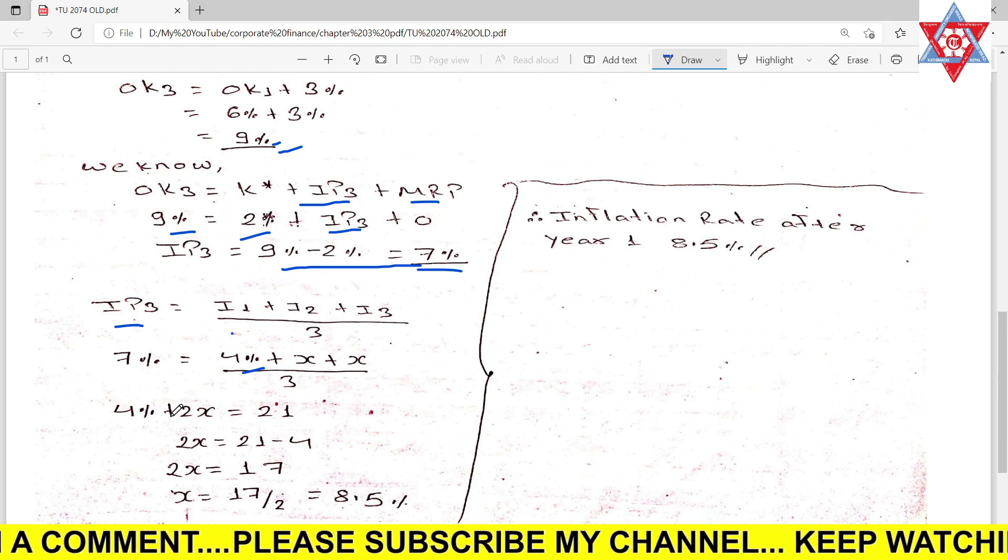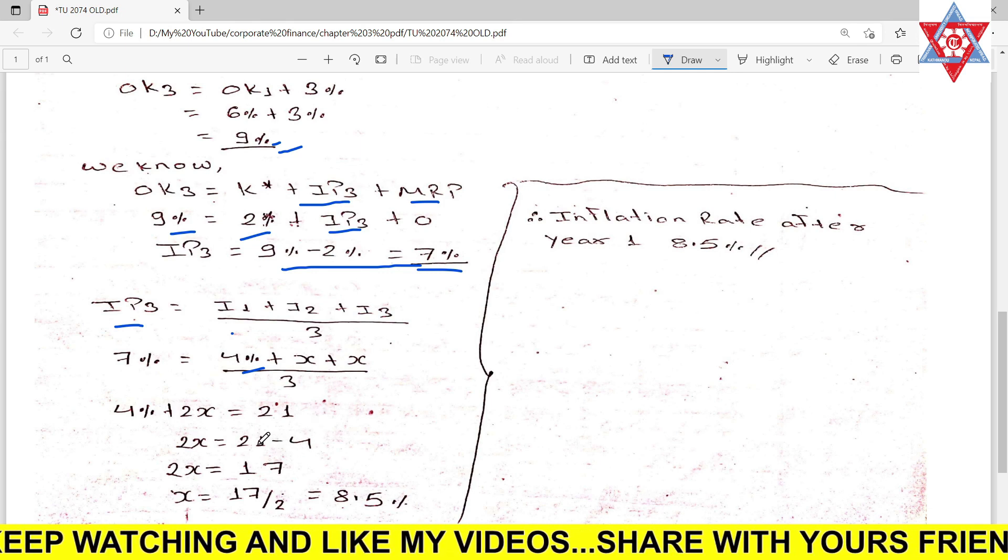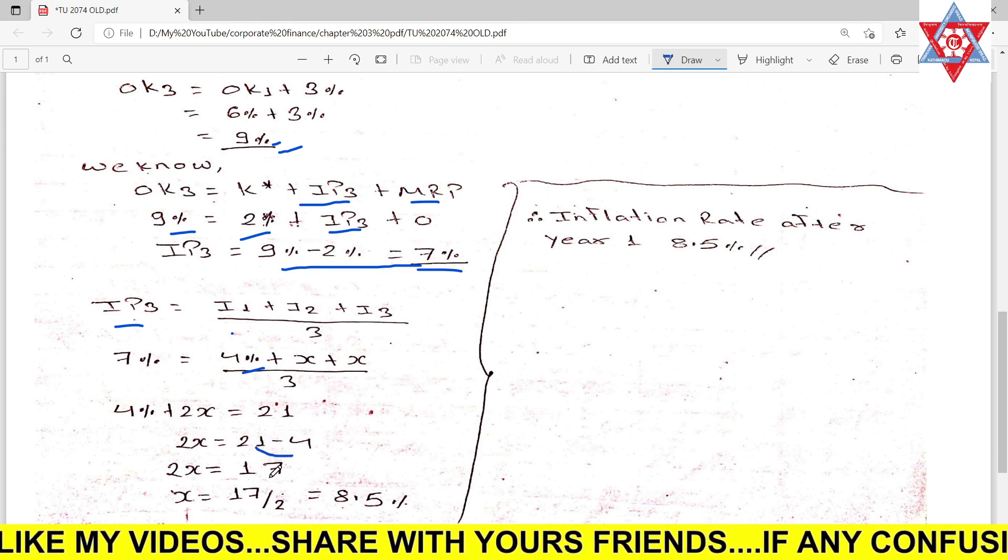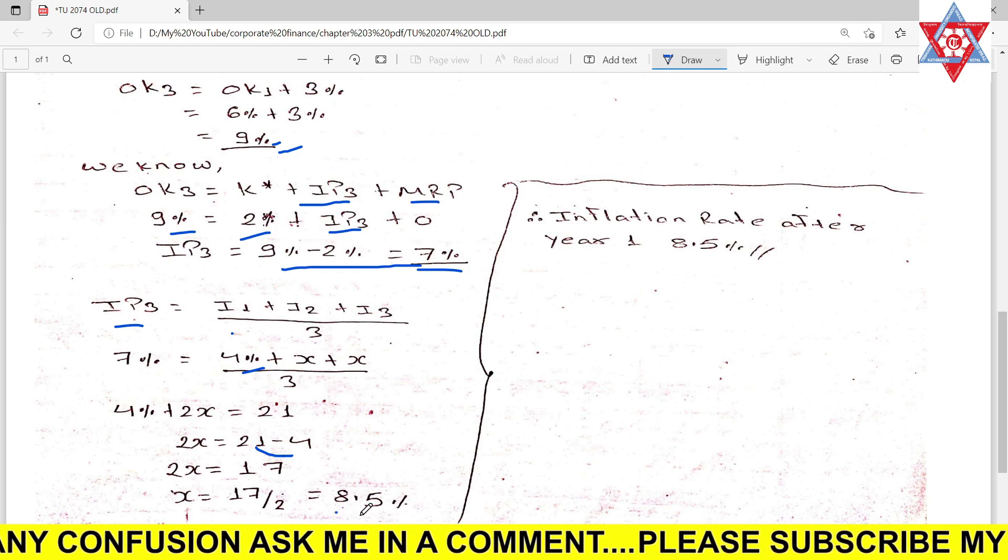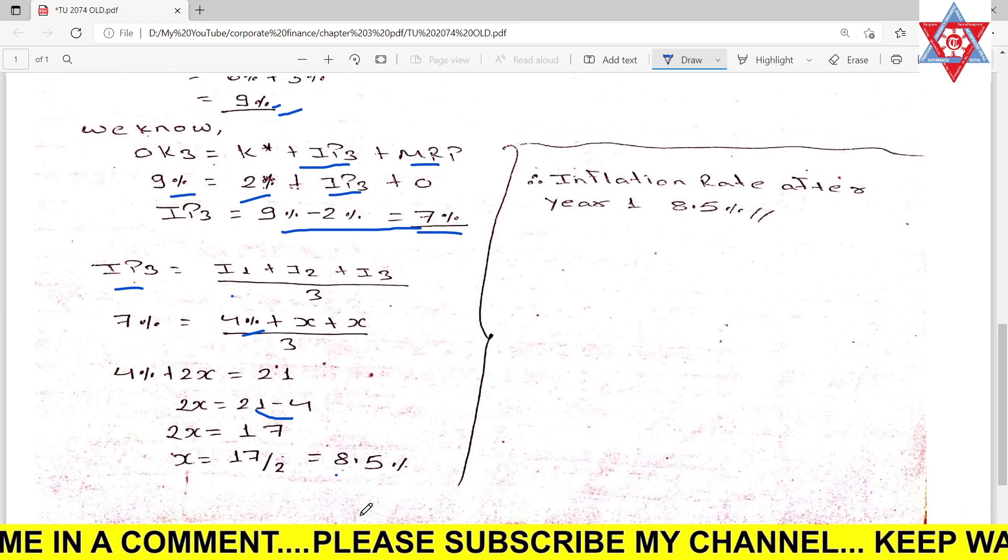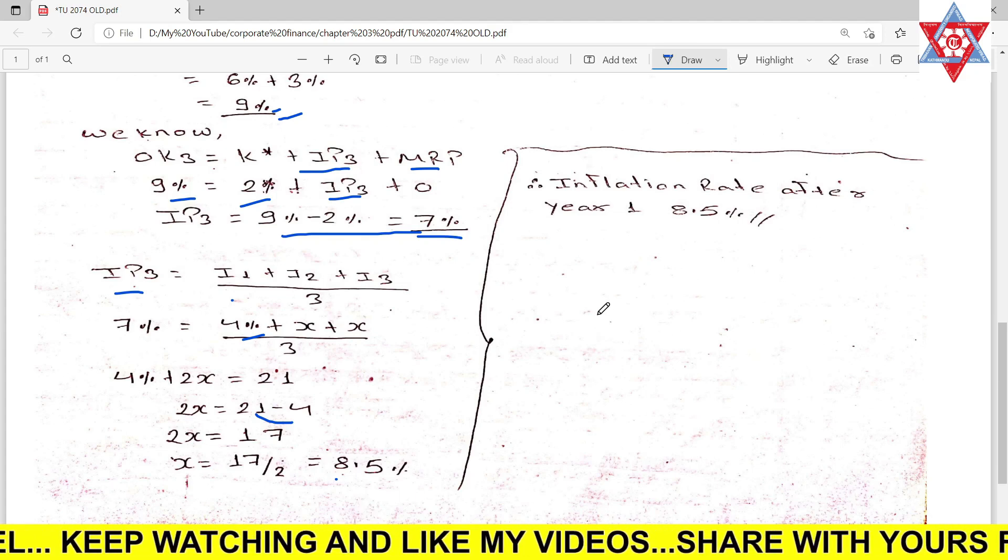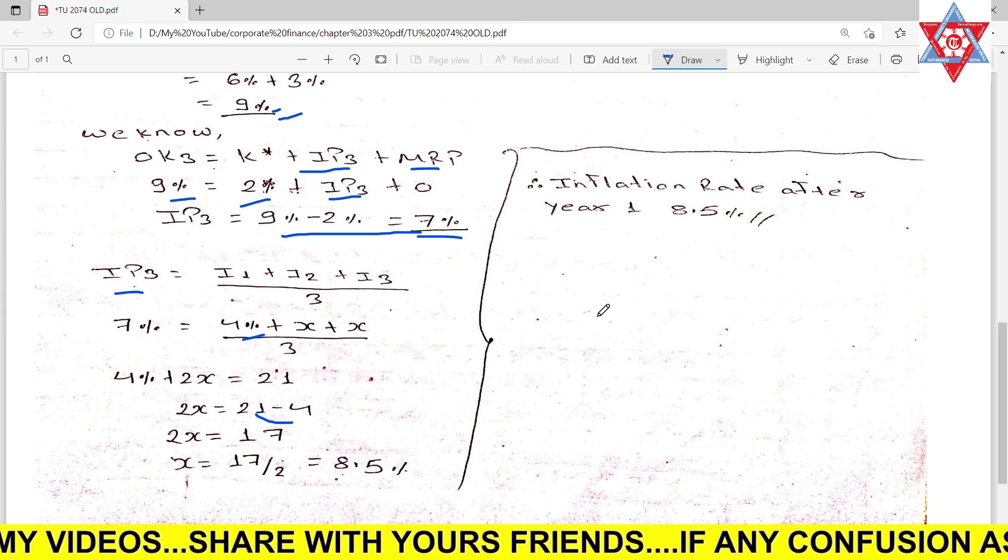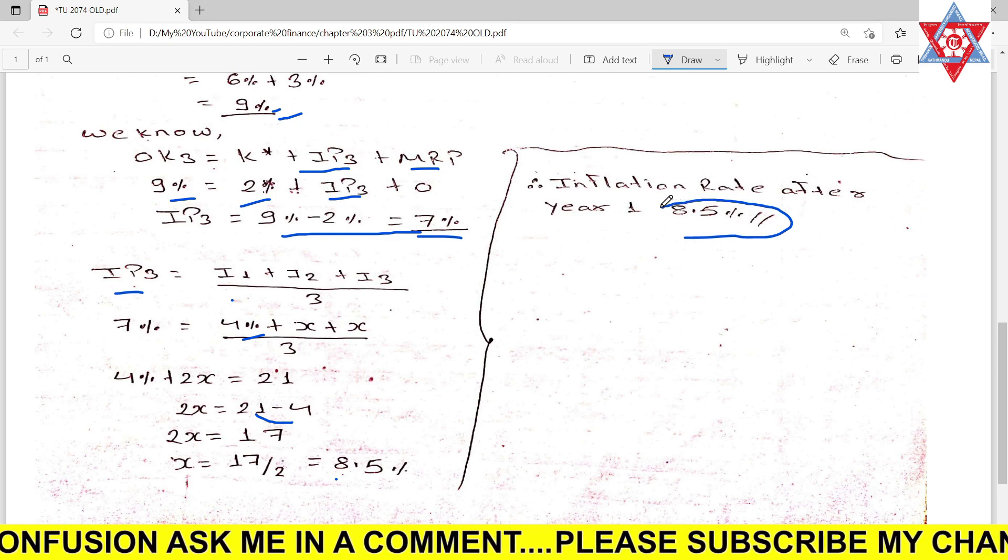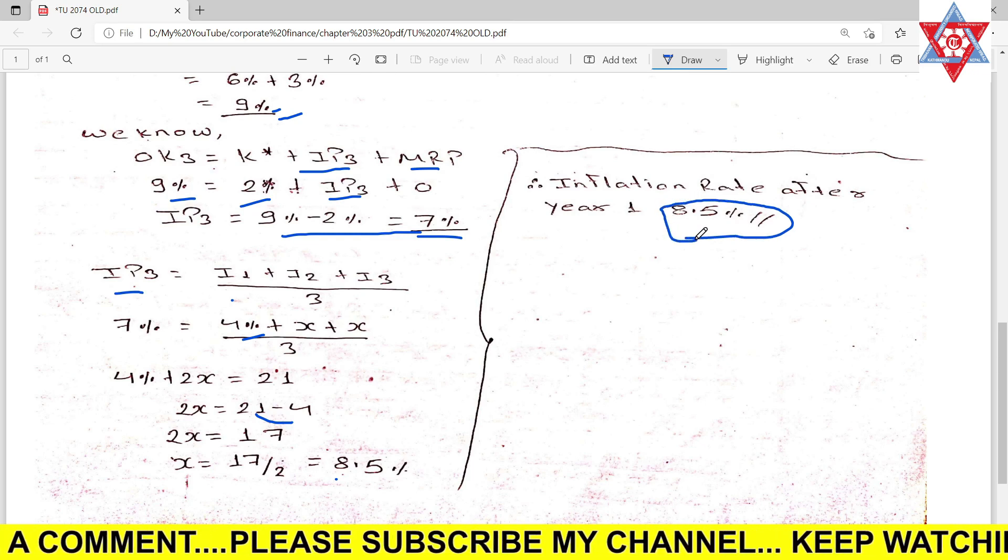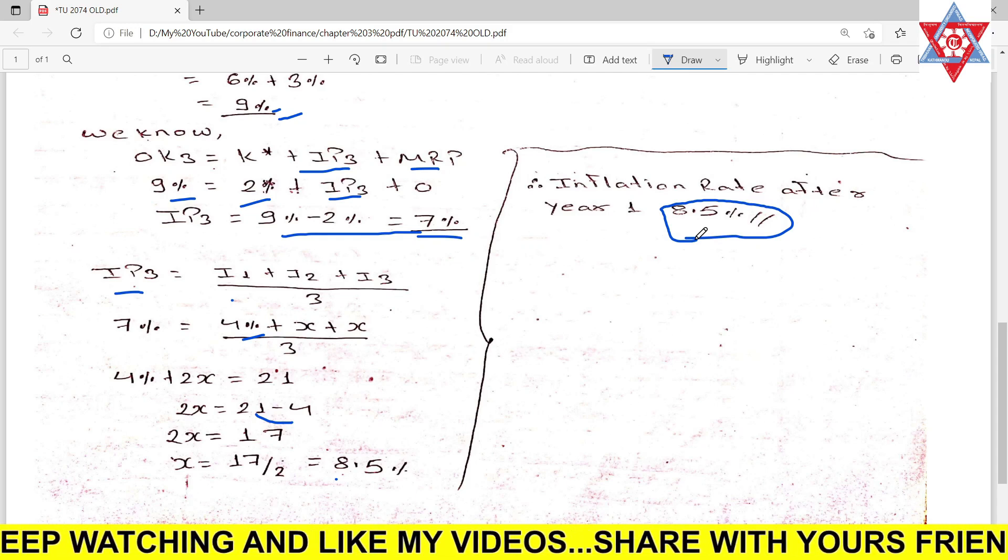Cross multiply: 4 plus 2X equals 21. 2X equals 17. X equals 8.5 percent. The inflation rate after year one is 8.5 percent.